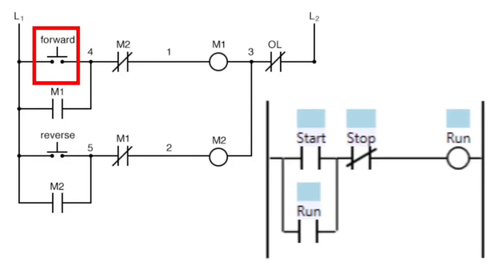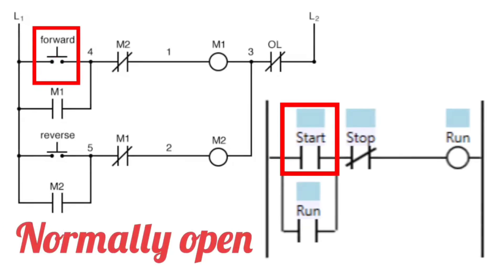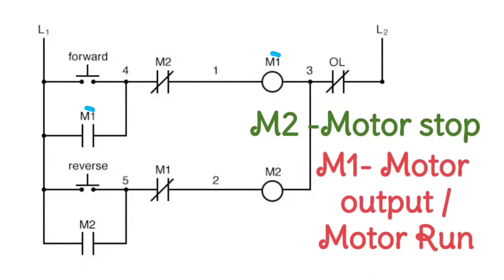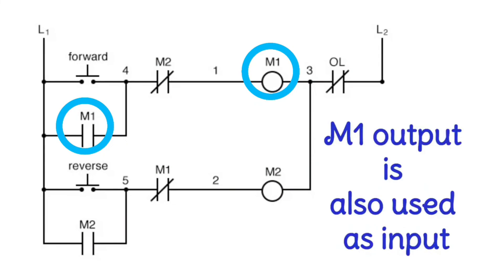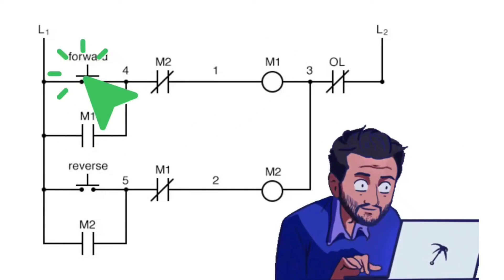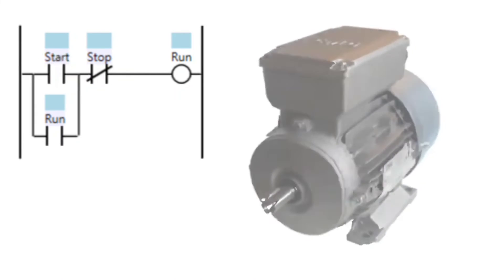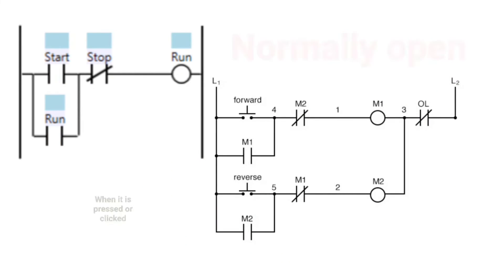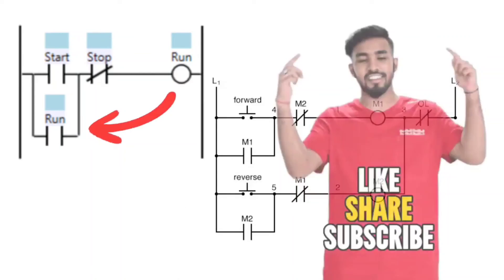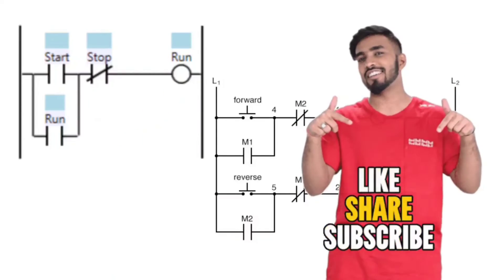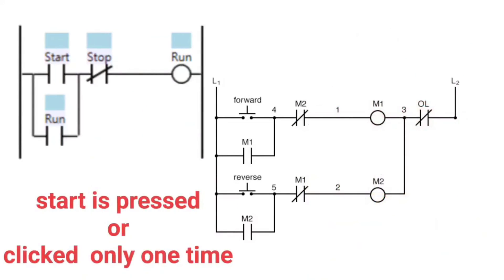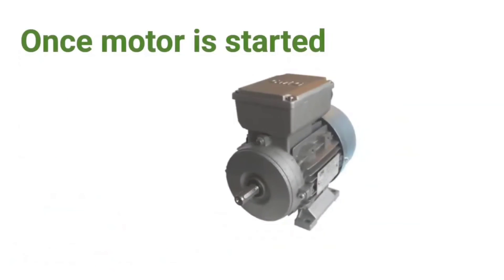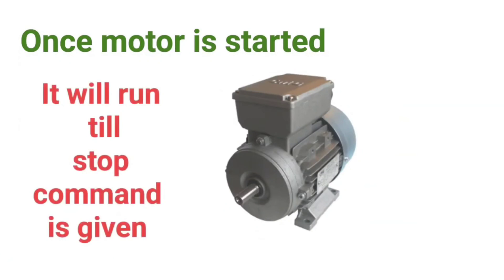Here, forward mode is working like normally open. M2 is motor stop, M1 is output. M1 output has also been used as input. According to programming, as soon as you press or click forward, the motor will start, because forward is normally open. When you press it, the current signal will start passing through it.